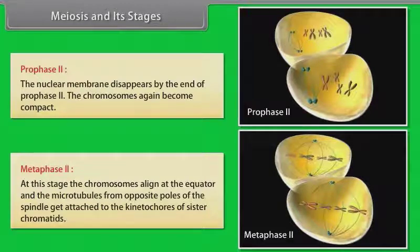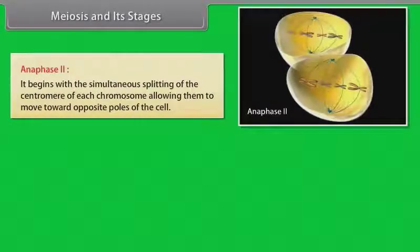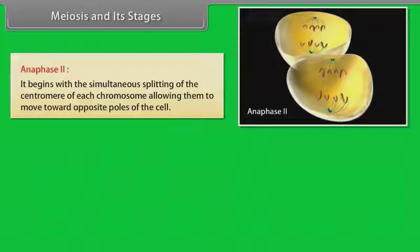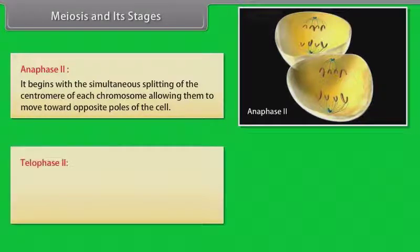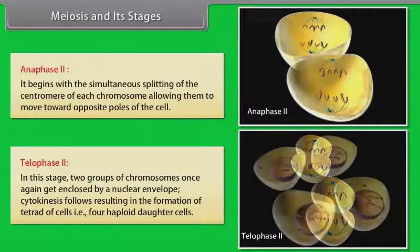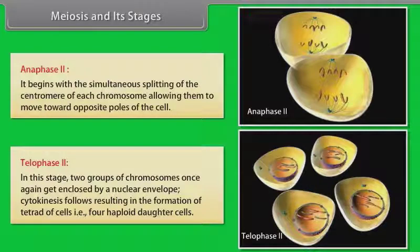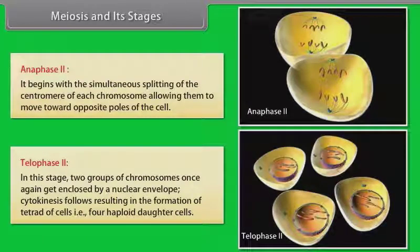Metaphase 2 is followed by anaphase 2. Anaphase 2 begins with the simultaneous splitting of the centromere of each chromosome, allowing them to move toward opposite poles of the cell. The last stage of meiosis is telophase 2. In this stage, two groups of chromosomes once again get enclosed by a nuclear envelope. Cytokinesis follows, resulting in the formation of tetrad of cells, that is, four haploid daughter cells.